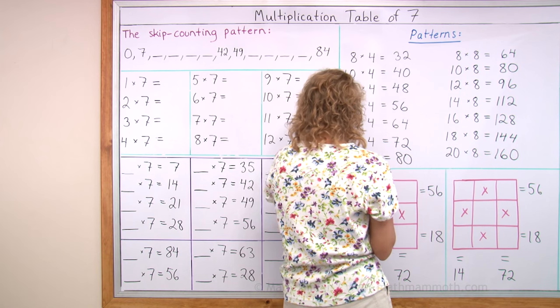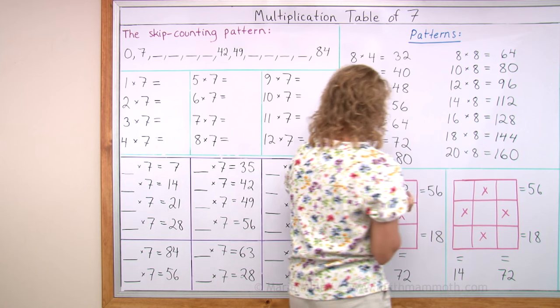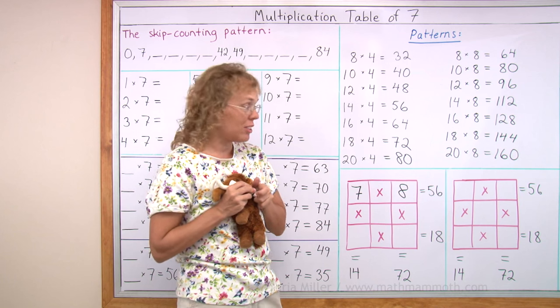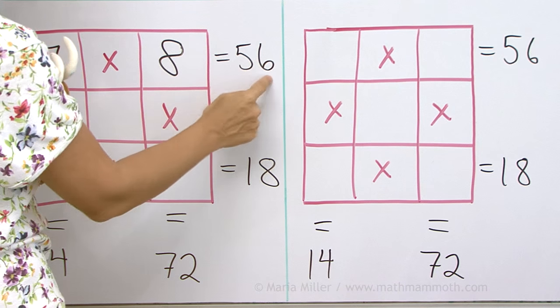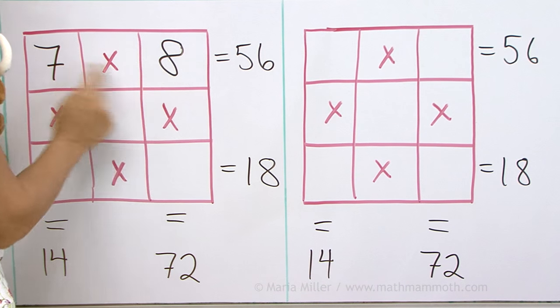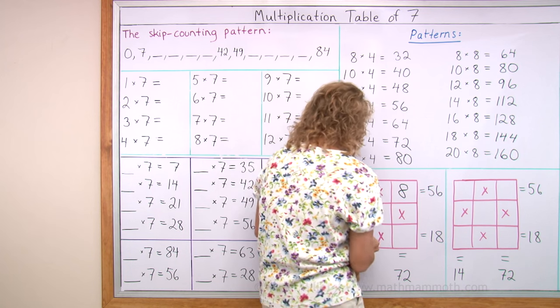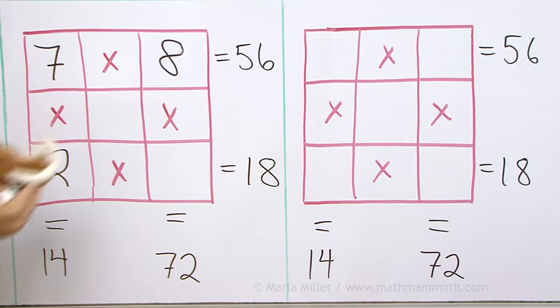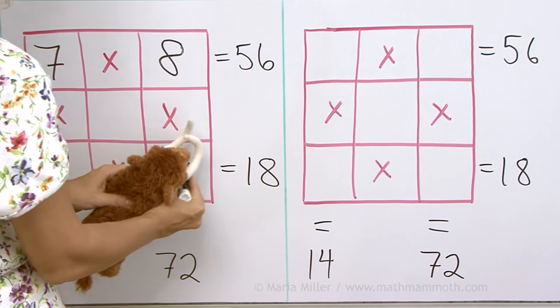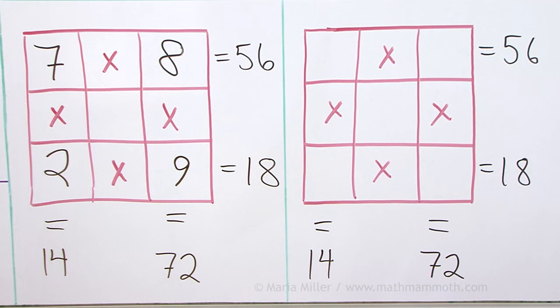Mathie decides. What are you writing here? Aha! Seven times eight is fifty-six. Do you remember the rhyme? Five, six, seven, eight. Fifty-six is seven times eight. Now it should be easy to solve. Yep. Two goes there. Nine goes there. That was easy.